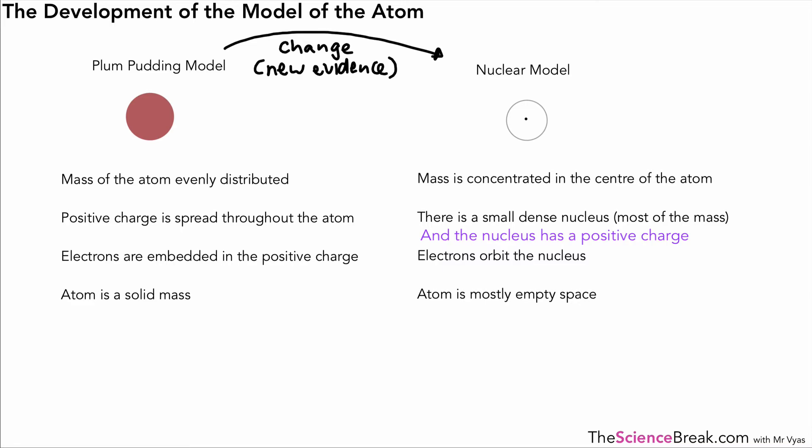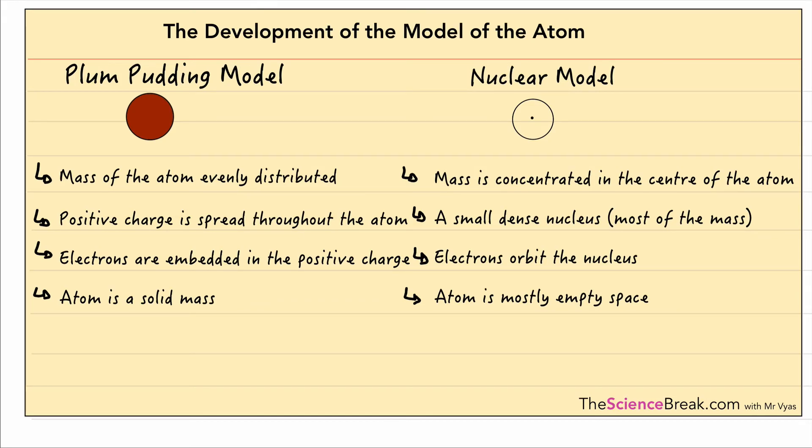Those are the key differences between the plum pudding model which was replaced by the nuclear model. It's a thing you have to be able to do: you should be able to compare the two. So it's perfect for putting onto a revision card. You can highlight those two key things because they are key words from the spec: the plum pudding model and the nuclear model. As we said, you should be able to compare the two. So that's it for this video, thank you for watching and I'll see you again soon.